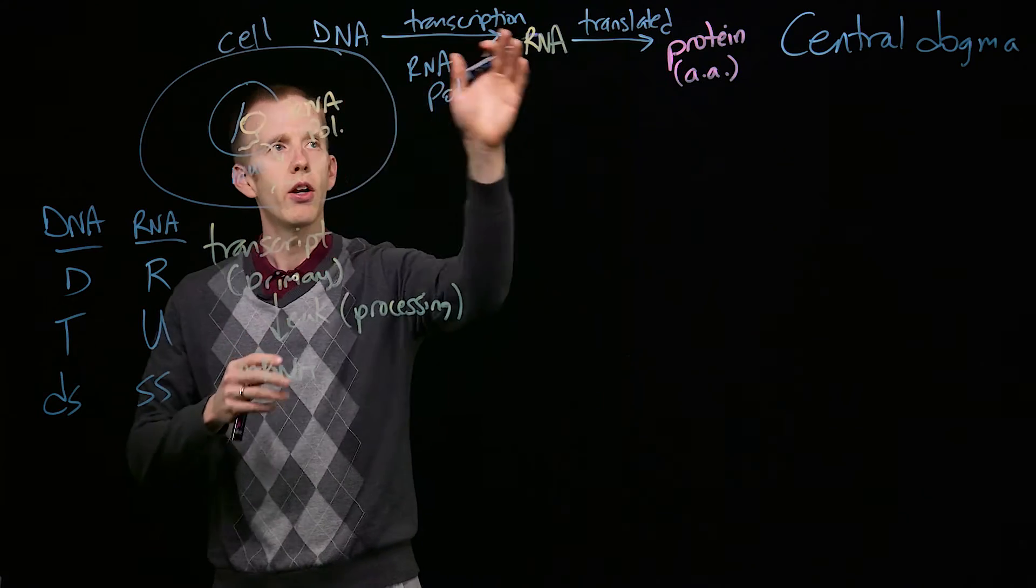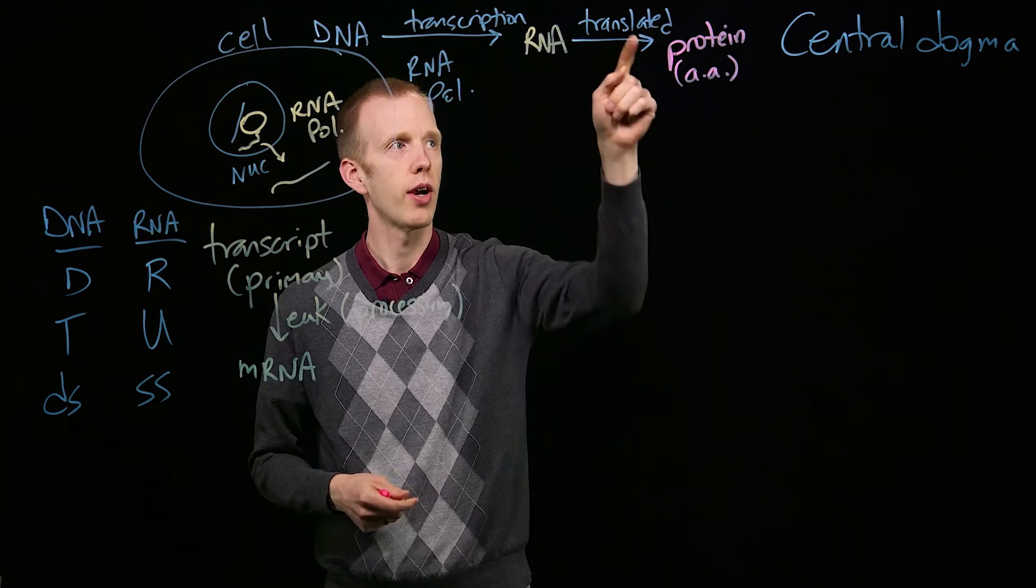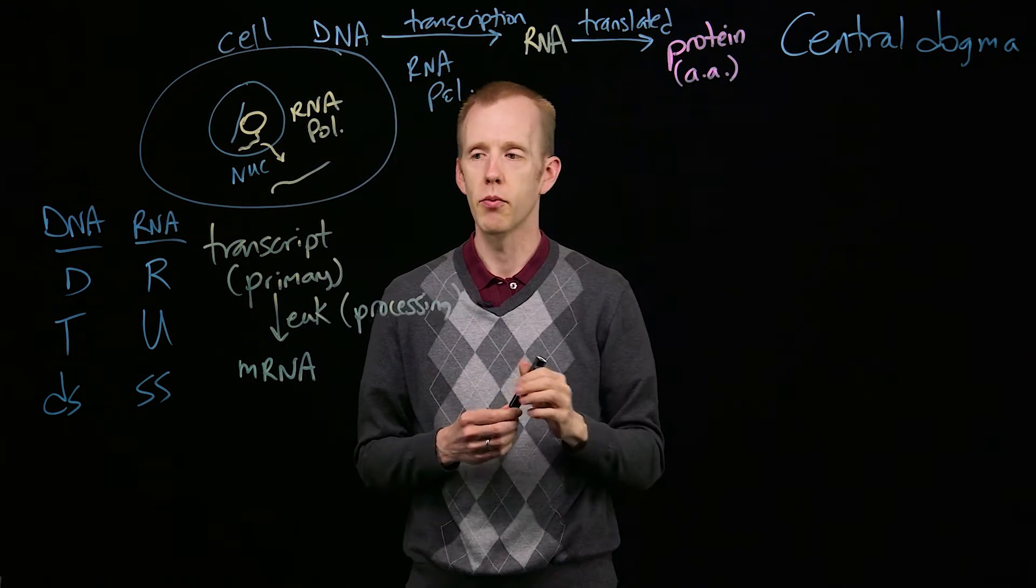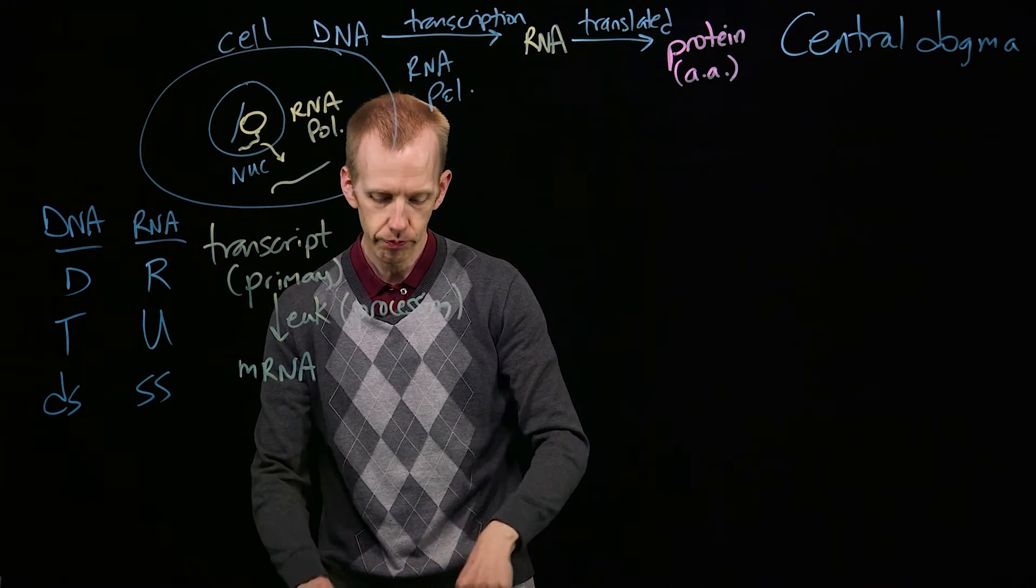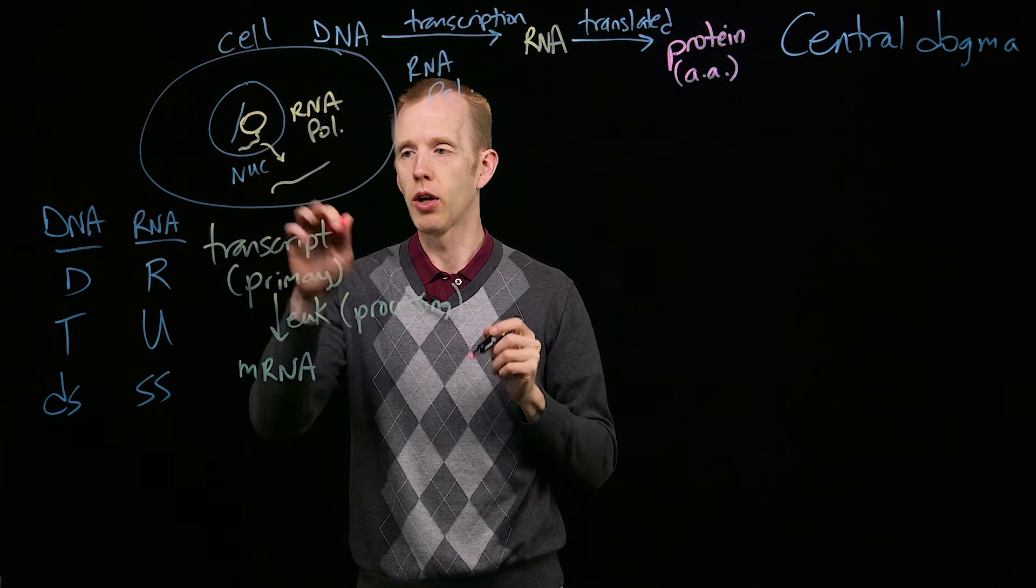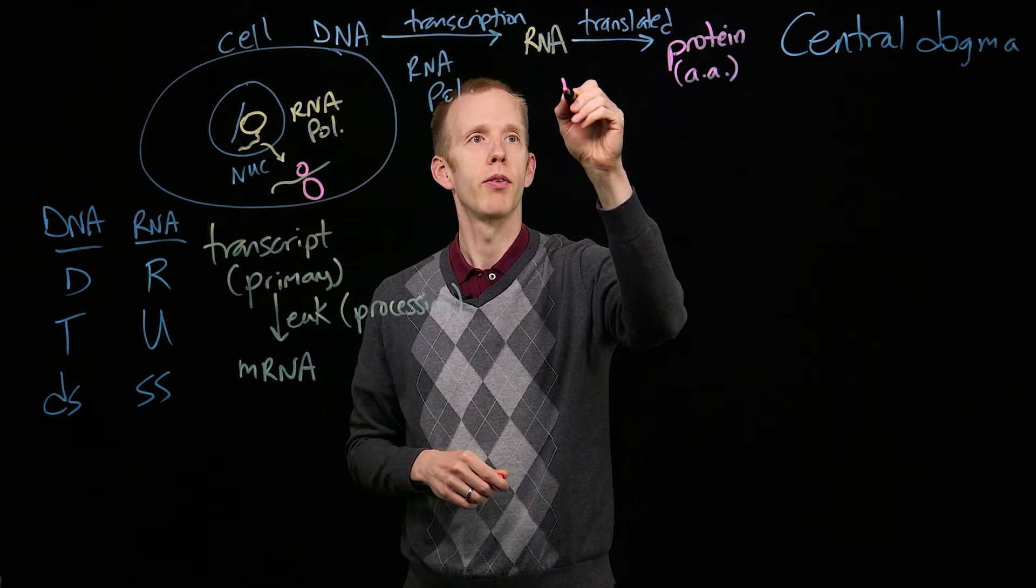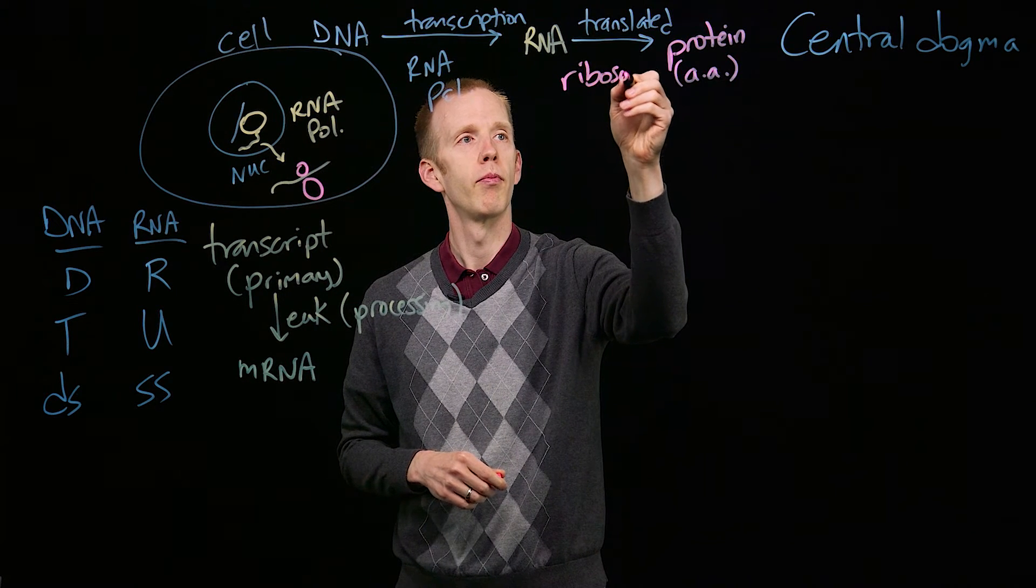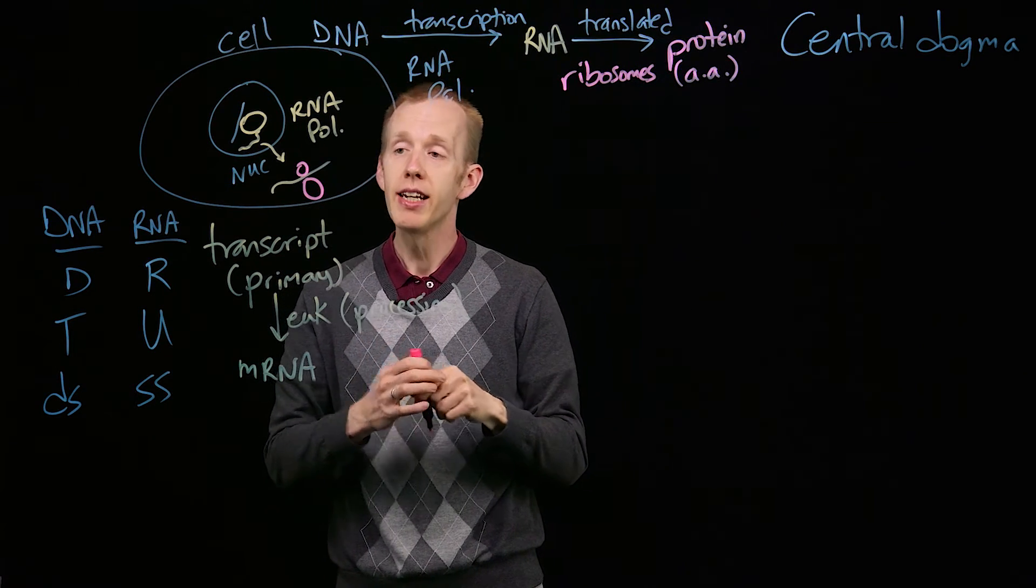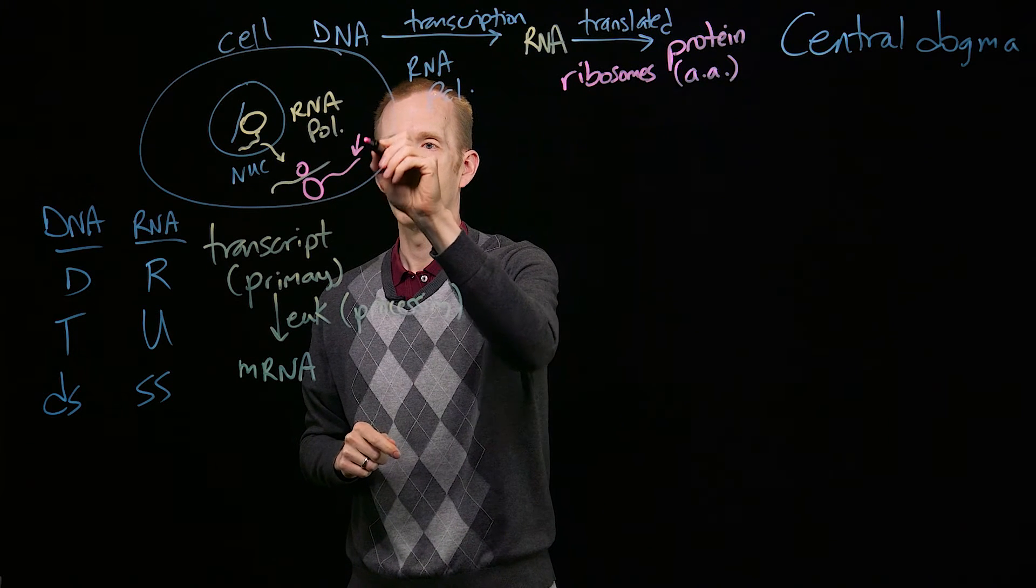So we move from DNA to RNA in transcription, and then in translation, RNA is translated into proteins, which are amino acids. Those are linear strings of amino acids, and that happens using the processed messenger RNA molecule in the cytoplasm by proteins called ribosomes. Those are the molecules that actually produce, by reading each messenger RNA molecule, a protein.